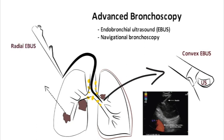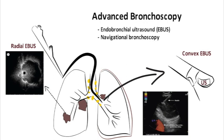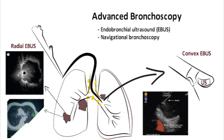Radial EBUS uses a small probe that can be inserted through the working channel of a bronchoscope. These probes can be used to evaluate the airways and structures of the central chest, but are more commonly used to direct biopsies of peripheral lung lesions. Computer-assisted navigation, or navigational bronchoscopy, is used to help locate small peripheral nodules for biopsy. There are several systems currently on the market. Some use high-resolution CT scans and electromagnetic fields to navigate catheters and instruments towards nodules in the peripheral lung.